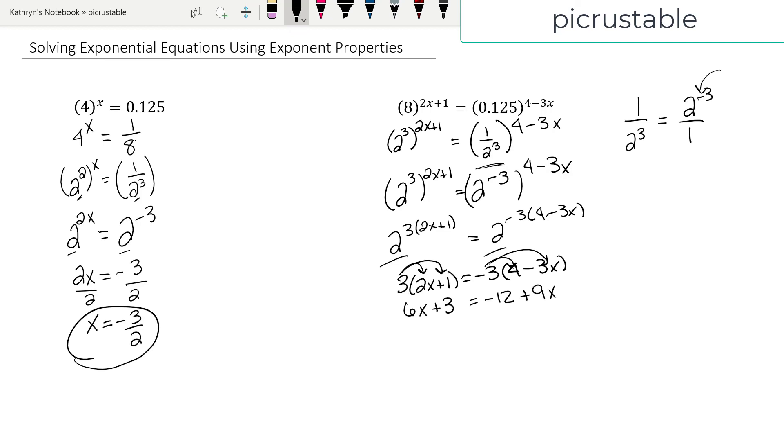Now it's just a matter of algebra. I'm going to subtract 9x from both sides. So I have negative 3x plus 3 equals negative 12. I'm going to subtract 3 from both sides. So I end up with negative 3x equals negative 15.